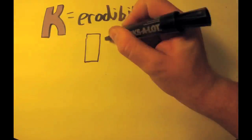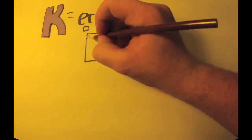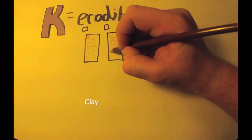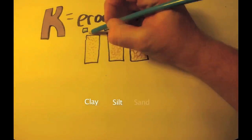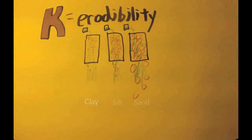K is the erodibility factor. This is affected by the soil's physical properties. Different soil particle sizes will be affected differently. The larger the particle size, the more soil that will be lost.